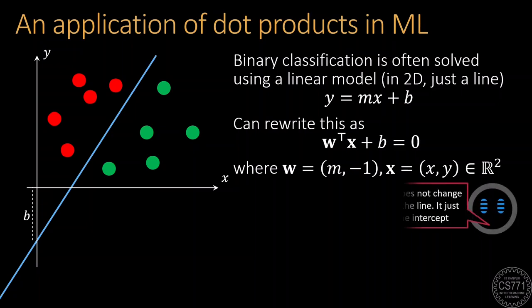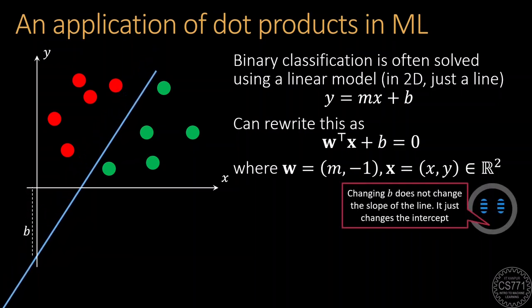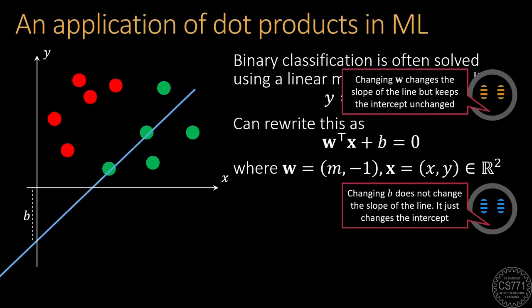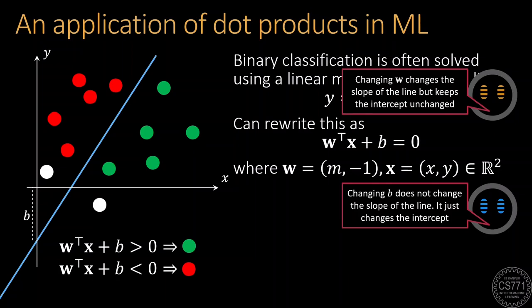Now, changing the bias parameter of this model, that is b, does not change the slope of the line. It just changes the intercept. On the other hand, changing the w vector changes the slope of the line, but keeps the intercept unchanged. Now, if we get new data points for which we don't know the label, we can predict on these data points simply by looking at the sign of w transpose x plus b. If it's greater than zero, we can predict it as green, otherwise red.